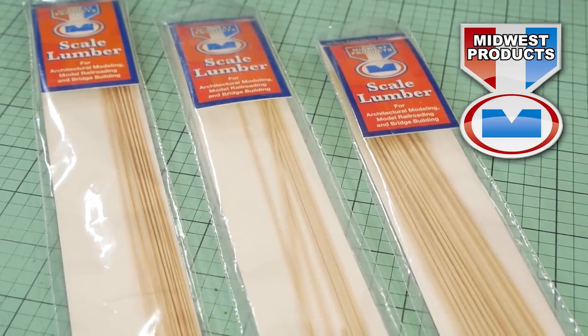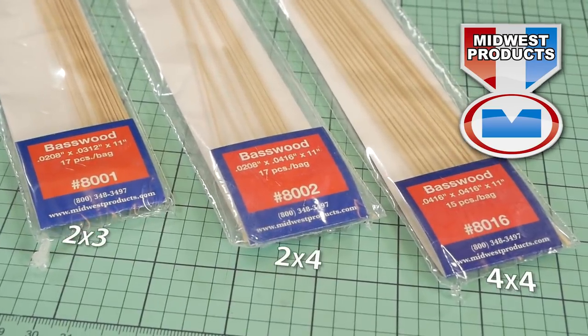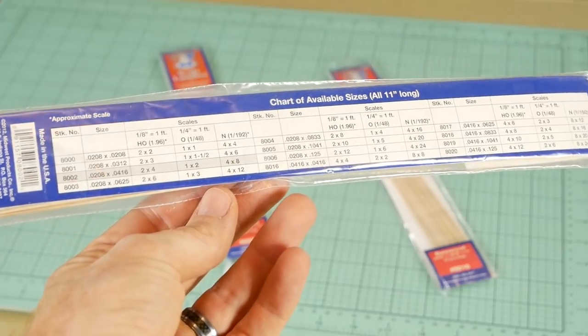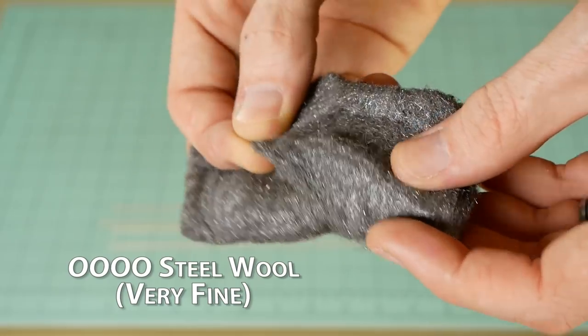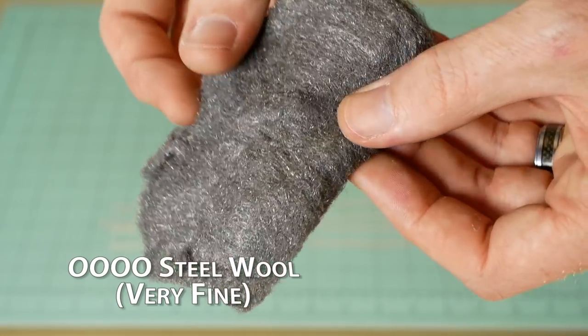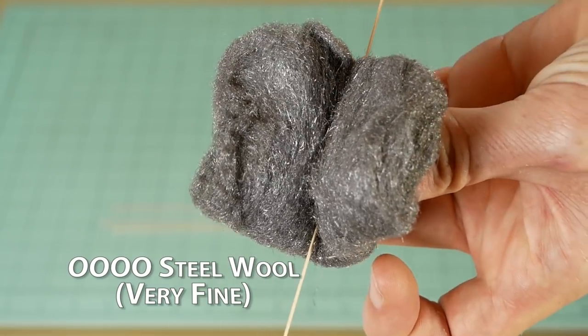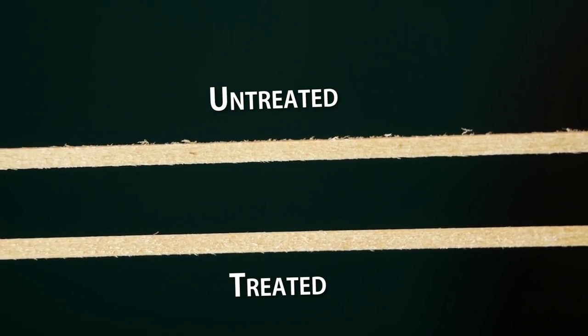The strip wood I'm using for these crates are a Midwest product scale lumber. I'm using 2x4s, 2x3s and 4x4s. There's a scale chart on the back of the packaging. Strip wood tends to have a lot of fibers on it. To remove the fibers and get a nice smooth piece of strip wood I gently drag each piece through some very fine steel wool. You can see the difference it makes here.